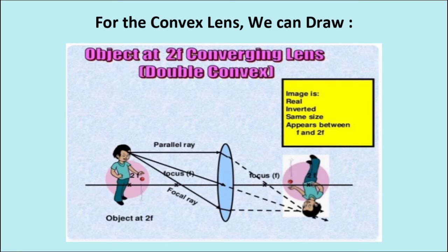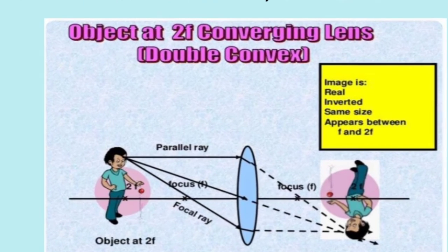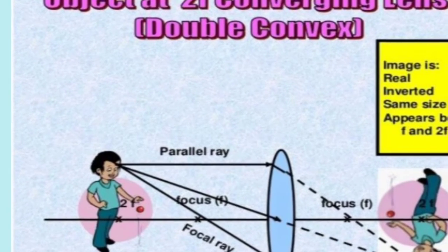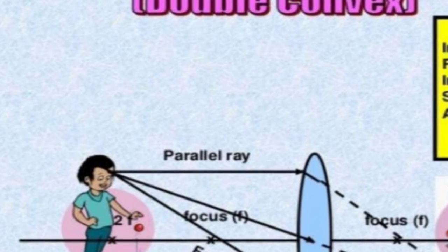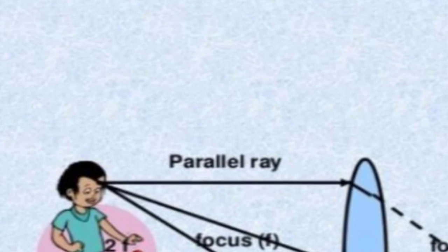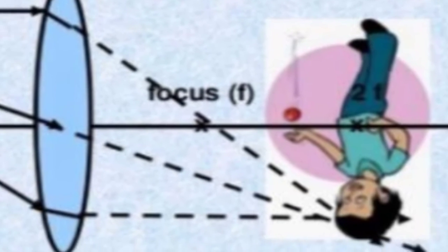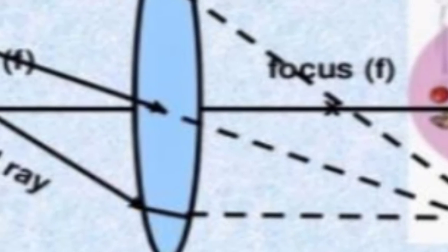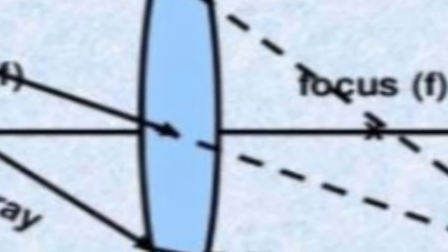In here you see what is the result between the image if the object is beyond the double focal point. But before we tackle that, there are three rules that we have to remember. Rule number one: ray parallel to principal axis will pass through focus. Rule number two: ray passing through focus will become parallel to principal axis. Rule number three: ray passing through optical center will emerge without deviation.